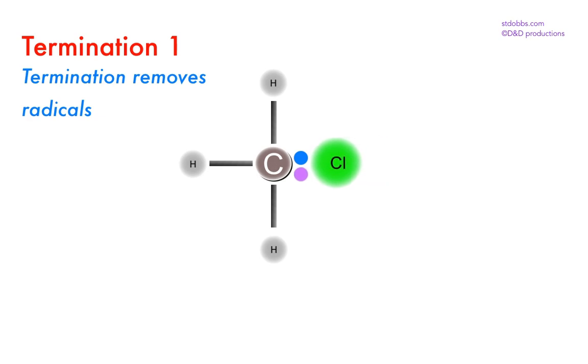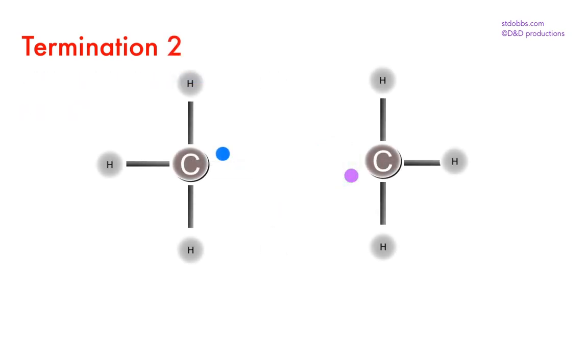A methyl radical can form a bond with a chlorine radical to form chloromethane. Alternatively, two methyl radicals can come together to form an ethane molecule.